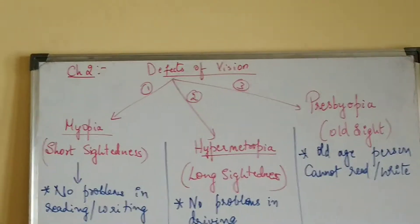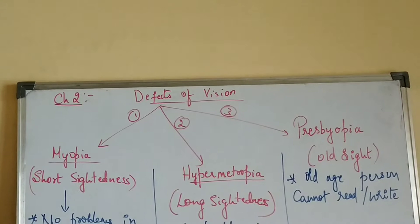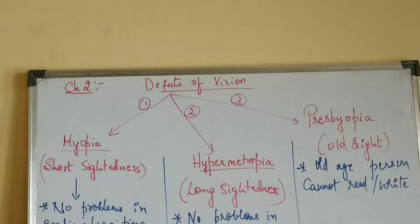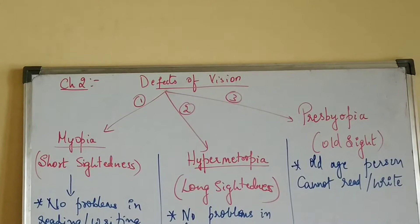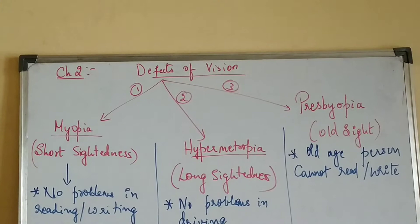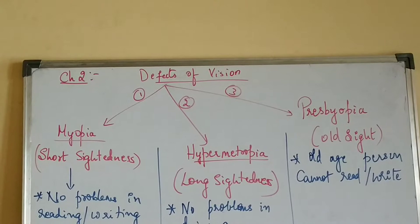We are in Chapter 2 of physics, that is 'Human Eye and the Colourful World.' Moving to the next topic — defects of vision — which means what are the defects of the human eye when it comes to viewing objects and the formation of the image on the eye when we see objects.